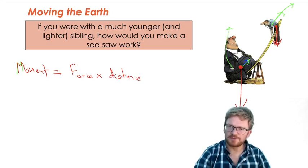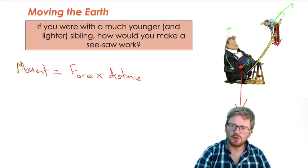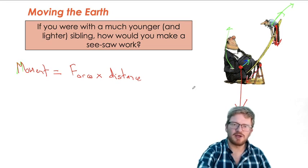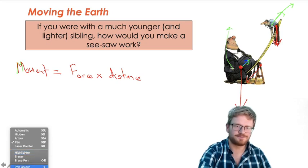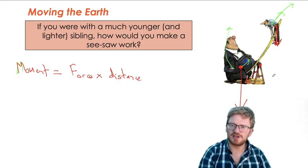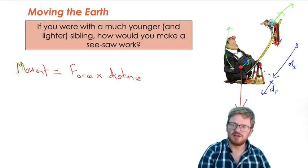So in this instance, the distance that I'm interested in is always the distance from the pivot to the point where the force is acting from. So if I was to extend it down this way, this would be my first distance and this distance here would be a second distance. So let's call that D2 and that D1.